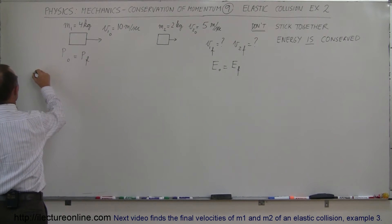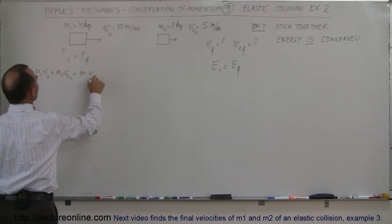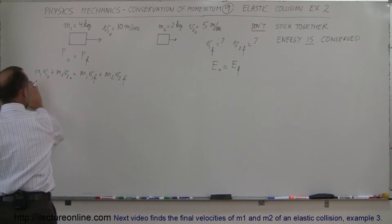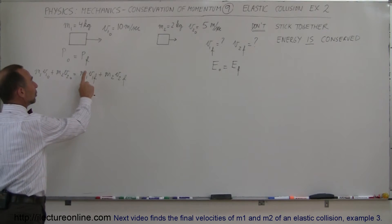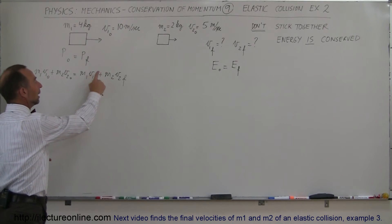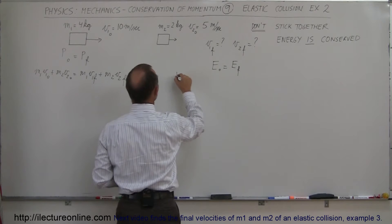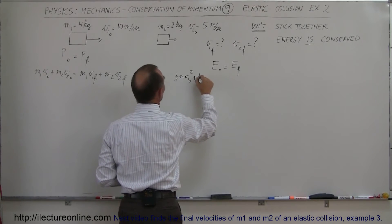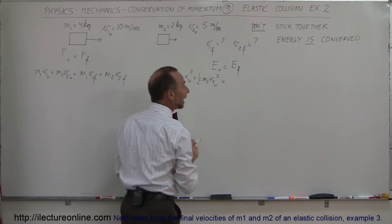Our first equation will be written as follows: M1 times V1 initial plus M2 times V2 initial equals M1 times V1 final plus M2 times V2 final. Notice everything on the left side of the equation is known. We know both initial velocities, we know their masses, but on the right side of the equation we do not know the final velocity for 1 and the final velocity for object number 2.